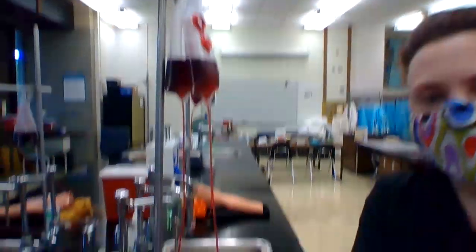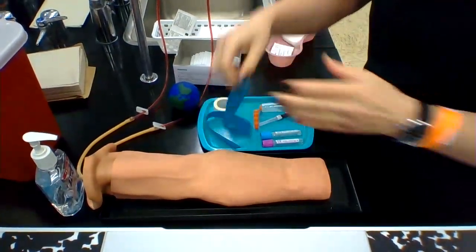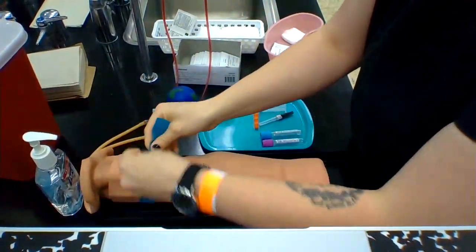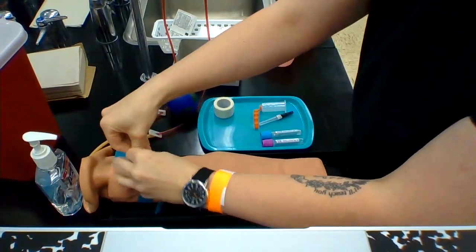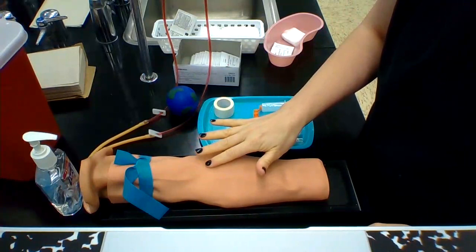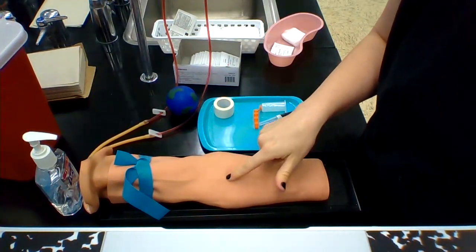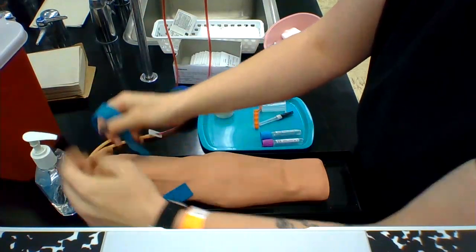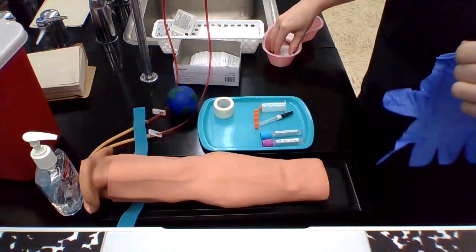Alright, so here's our arm. Start out by applying your tourniquet. Pat around, look for a vein, find a landmark, know the direction, undo the tourniquet, gather supplies.